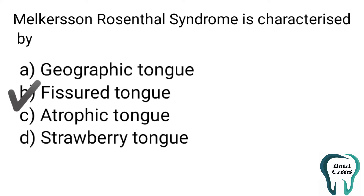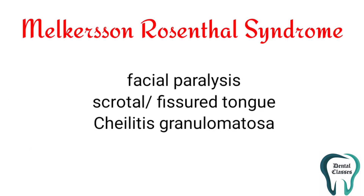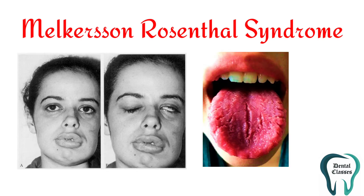Now let's see what are the characteristic features of Melkersson-Rosenthal syndrome. There are three main features: one is facial paralysis, two is scrotal or fissured tongue, and three is chelitis granulomatosa. You can appreciate these features in the given pictures below.